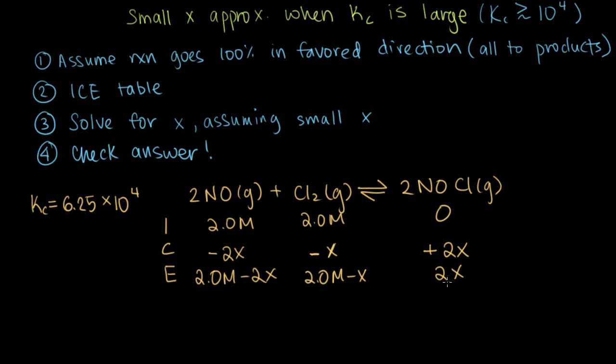Let's look back at our original steps from the beginning of this video. We just made an ICE table, so that's step two — but did we assume that the reaction goes 100% in the favored direction? It turns out we didn't. We actually skipped step one to set up our ICE table in what seems like a pretty natural way, and it turns out that's not good. Let's see what happens when we skip step one and keep going.